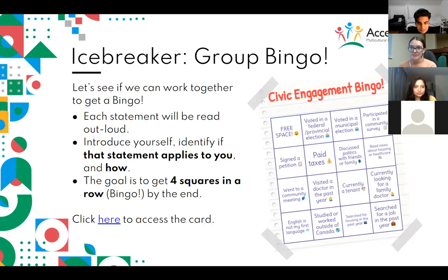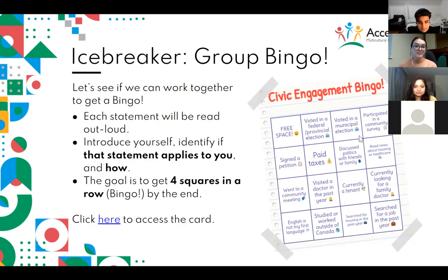If the statement applies to you, please raise your hand, tell us your name, and then tell us how that statement applies to you. For example, if we picked 'voted in a municipal election,' you can raise your hand, tell us your name, and maybe tell us when you did that. If we get four squares in a row — horizontally, vertically, or diagonally — we get bingo and win the game.